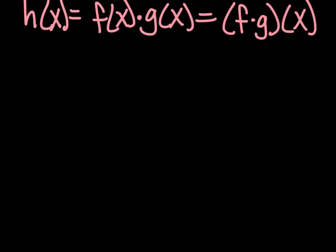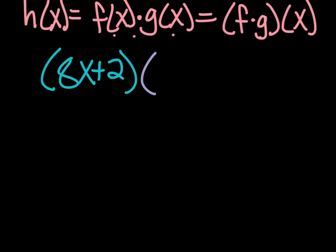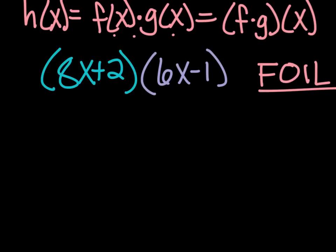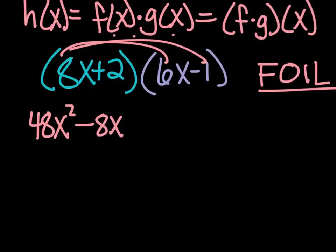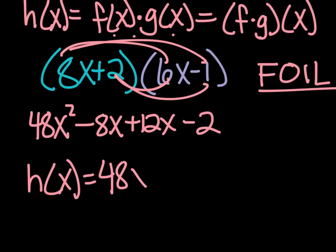Now we're going to take the same two f and g functions, and we're going to do h of x equals f of x times g of x, or it could be written f times g of x. My f of x is 8x plus 2—make sure you put it in parentheses—and I'm going to multiply it by my g of x, which is 6x minus 1. When you're multiplying two binomials, remember you've got to do FOIL. First, 8 times 6 would be 48x squared. 8x times minus 1 would be minus 8x. Outer, 2 times 6x is plus 12x. And last is 2 times negative 1 minus 2. Our h of x is 48x squared. Minus 8 and plus 12 would be plus 4x minus 2.